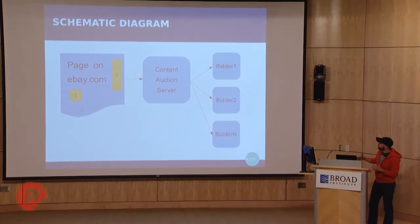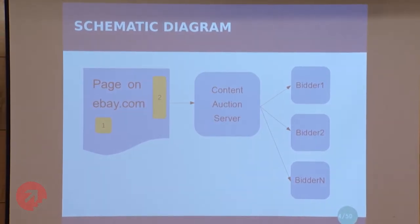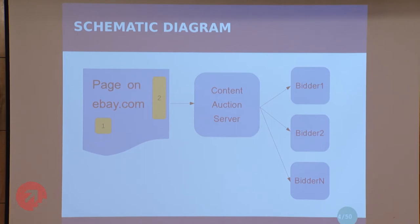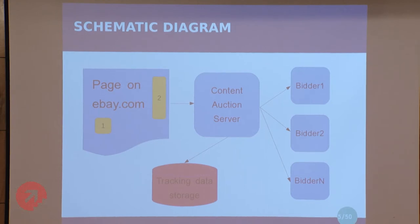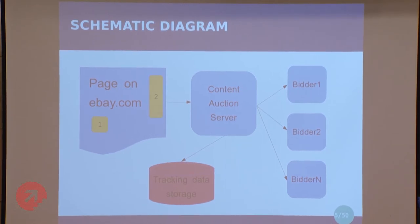I work in a team which is responsible for a content auction server, which needs to take a request for content — like for one or two slots on any page — produce some content. We use an auction and invite interested parties to put some content there, run the auction, figure out what is the best thing, and put it there. One of the cross-cutting aspects of that is tracking what happens during this auction.